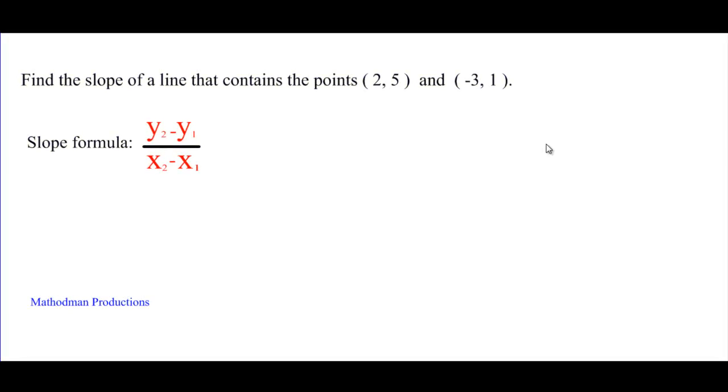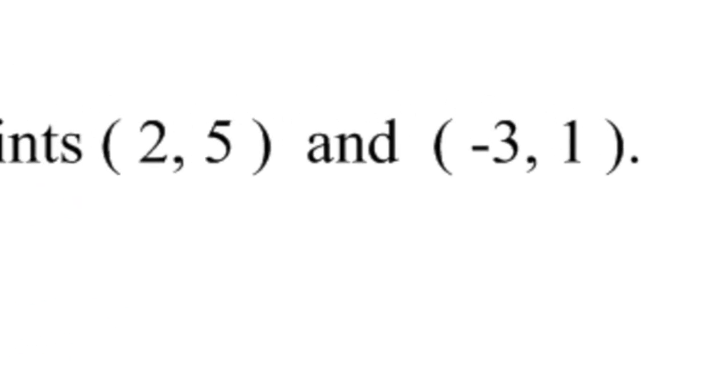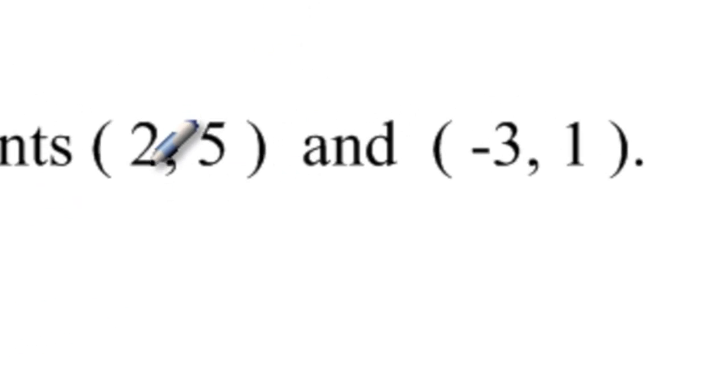Find the slope of a line that contains the points (2,5) and (-3,1). In the slope formula, there's little numbers that go there - those are not exponents. A lot of people get confused about what those are. In the set of coordinates, the first number is always an X value. The second number is always a Y.